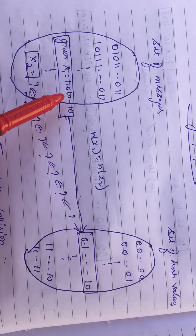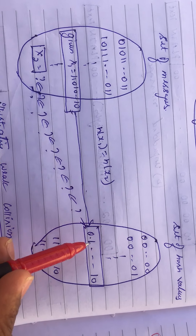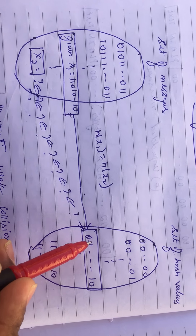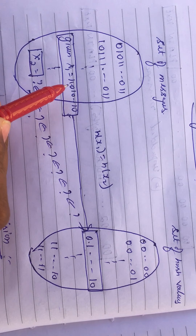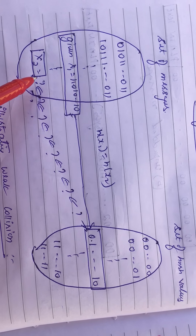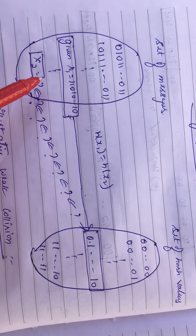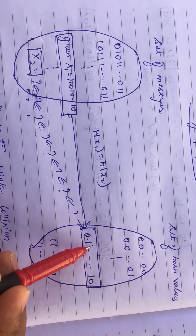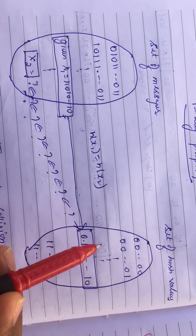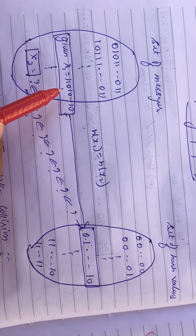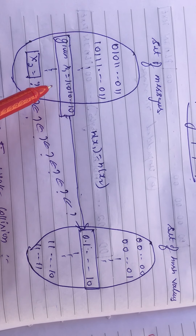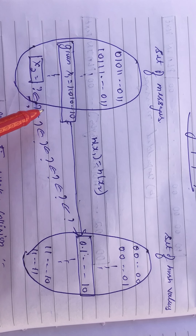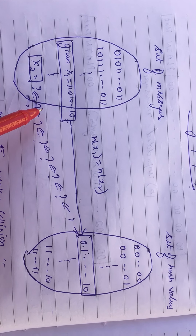In strong collision, they give only the hash value — for example 's' — and ask us to find both x1 and x2, which would be 'Sanjay' and 'Sonali'. They do not give the set of messages; they only give the hash value and ask us to find both x1 and x2, which is very much difficult. That is what strong collision means. Thank you so much.